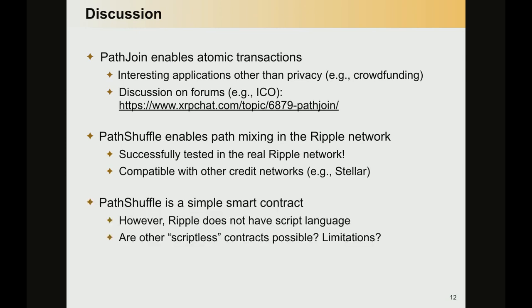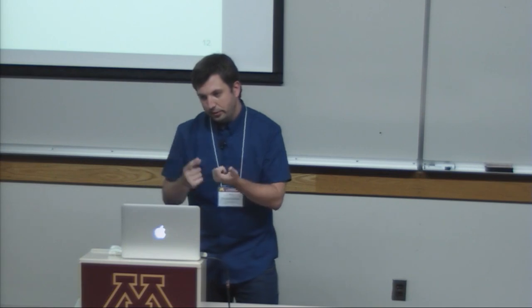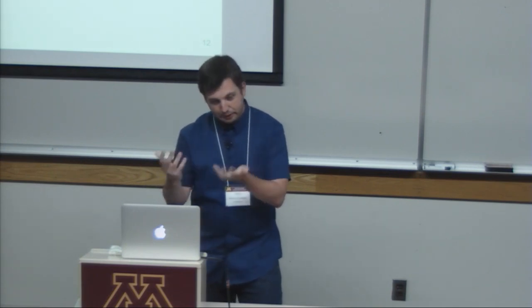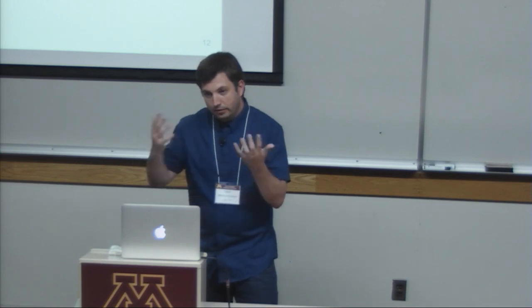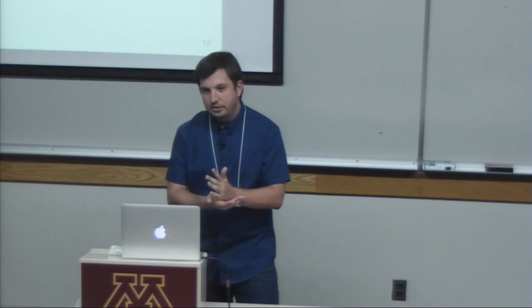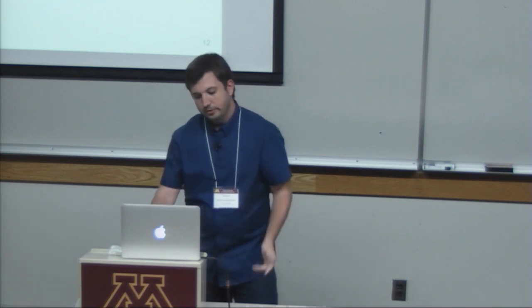Finally, the last point I want to make is that we consider PathShuffle like a small but still a smart contract. For that, we didn't need any script language — the only thing we needed is a distributed key signature and a special structure of the network. So we are wondering if it's possible to perform other scriptless contracts or other smart contracts without a script language in Ripple, and if not, what are the inherent limitations for having more smart contracts.